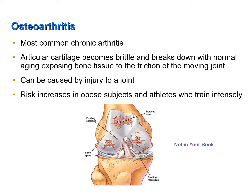Some of the factors that increase the risk of developing osteoarthritis include obesity. An increase in weight on a joint will increase the risk that the cartilage of that joint will break down and develop into osteoarthritis, particularly in the knees, the hips, and the ankles. Athletes who train intensely — something on the order of an Olympic athlete — are also at an increased risk of osteoarthritis. Normal, regular exercise does not appear to increase the risk of osteoarthritis.